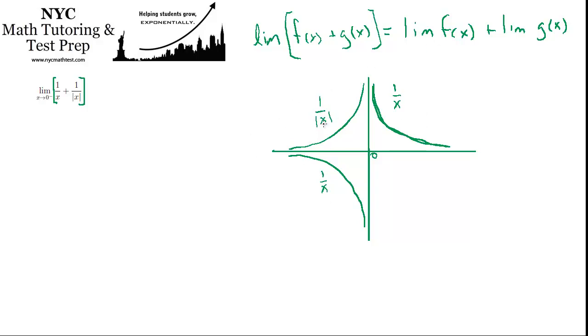And we can confirm, by the way, by looking at each of these functions, what is the 1 over x function approach as we approach 0 from the left? It goes to negative infinity, right? This thing is going lower and lower and lower. Presumably, the closer we get to 0, the lower it will get. So that's going to negative infinity. And 1 over absolute value of x, as we get closer and closer to 0, follow this curve along, is going to infinity. So that's kind of what we were saying before when we were going to break it up.